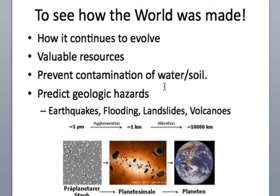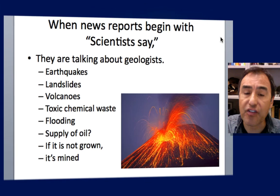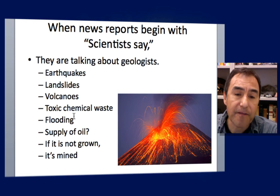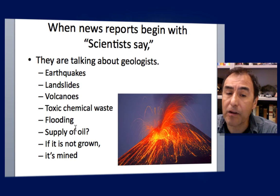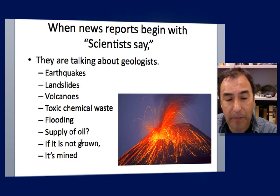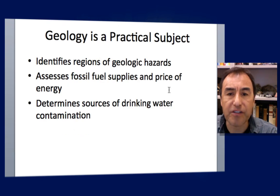When news reports begin with 'scientists say,' we know they're talking about geologists — because there are earthquakes, landslides, volcanoes, or toxic chemicals coming from a waste dump involved. A geologist can trace those materials. Flood insurance is very expensive; geologists make flood hazard maps. How long will our oil last? What are the differences between reserves and resources? As my professors told me in college: if it's not grown, it's mined — it's taken from the earth.